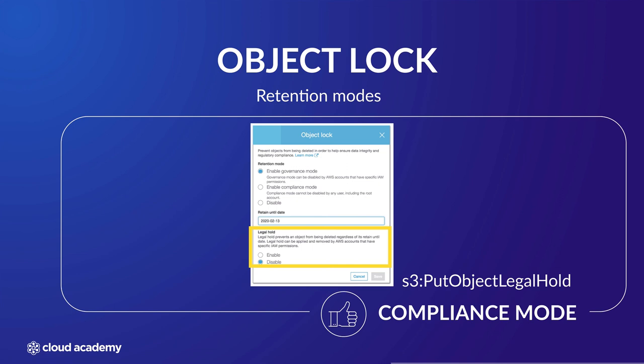The legal hold element only appears for object versions and not at the bucket level, and acts much like a retention period, preventing the object from being deleted. However, legal holds do not have an expiration date. Therefore, the object will remain protected until a user with the permissions of S3 put object legal hold disables the legal hold on the object. If an object is already protected by a retention period, a legal hold can also be placed on the object. When the retention period expires, the object will still be protected by the legal hold, regardless of the fact that the retention period has expired.